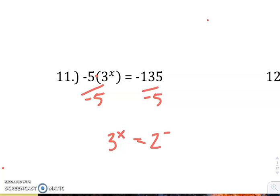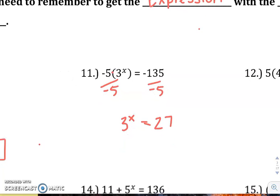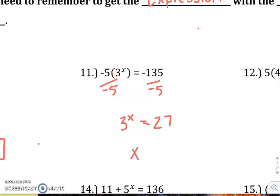So then 3 to what power is 27? 3 to the third. So x will be an exponent of positive 3.